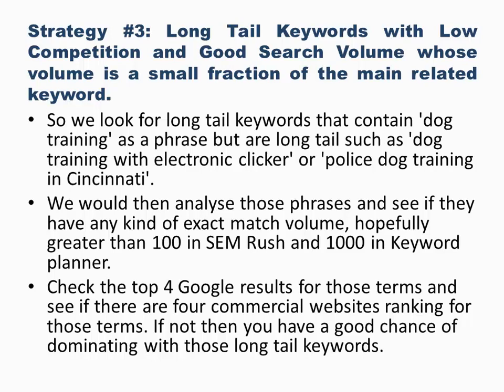Analyze those phrases and see if they have any exact match volume — hopefully greater than 100 in SEMrush (which is local) and greater than 1,000 in the keyword planner (which is global). Then check the top four Google results for those terms and see if there are four commercial websites or blogs ranking at the top. If the results look sketchy, you probably have a good chance of dominating if you really target those long-tail keywords, set up your silo the right way, and get your content laser targeted into that blog.